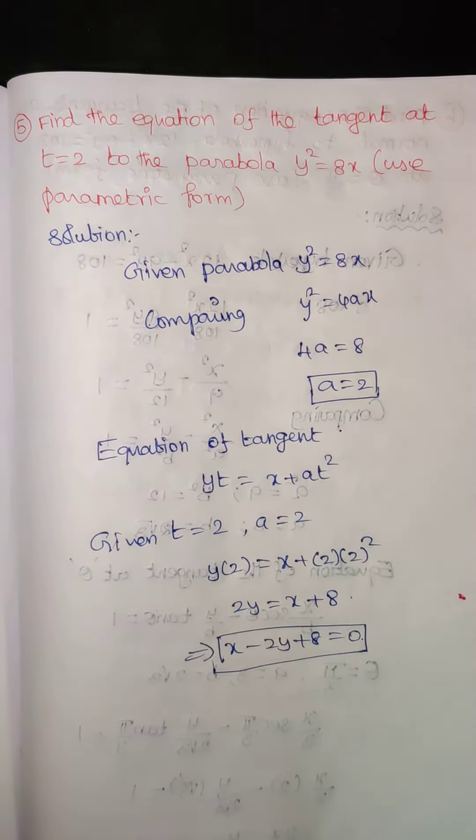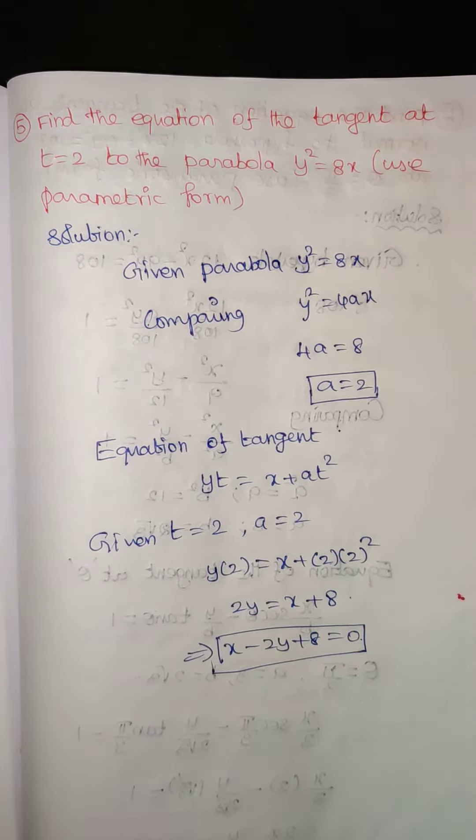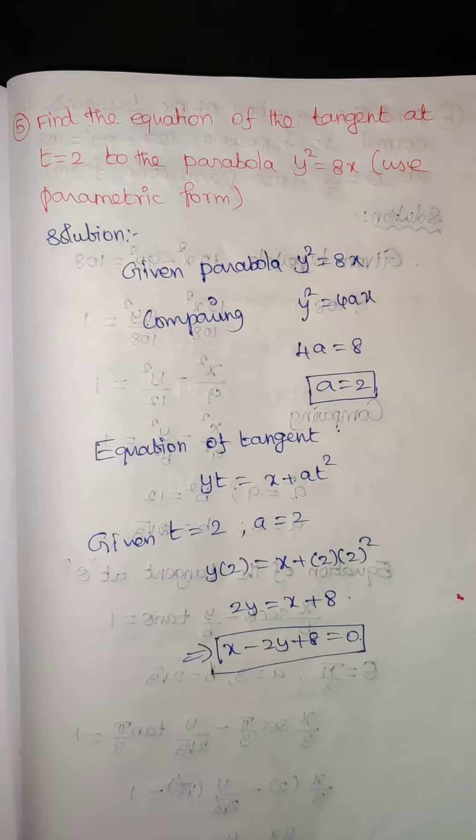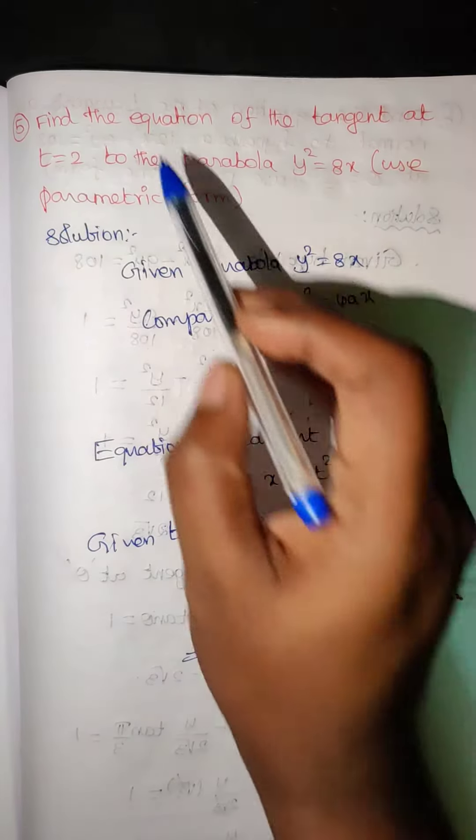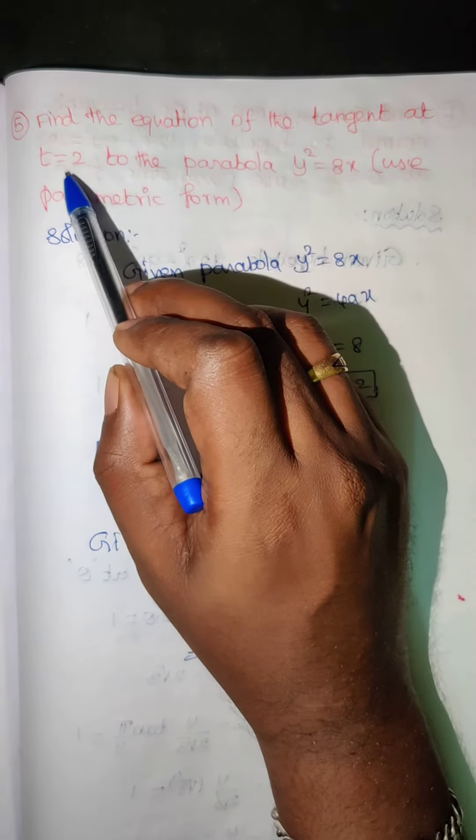Hi children, this is Dinesh here. Today we are going to discuss exercise 5.4 and question number 5: Find the equation of the tangent at t equals 2 to the parabola y squared equals 8x.